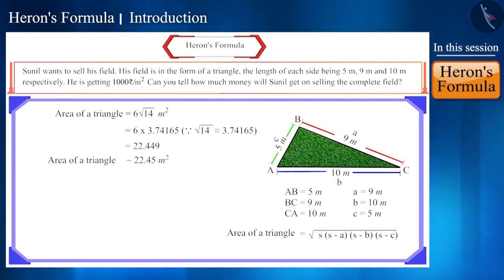The solution does not end here. We need to find the amount of money that Sunil will get on selling the field. For every square meter, Sunil gets rupees 1000.